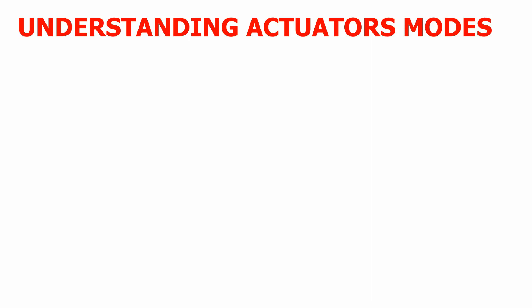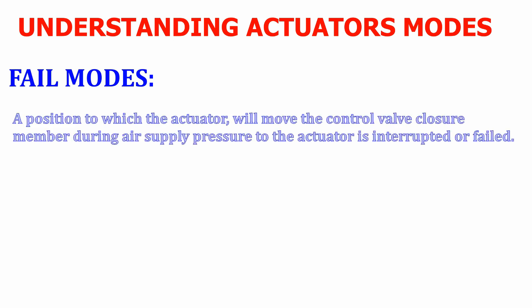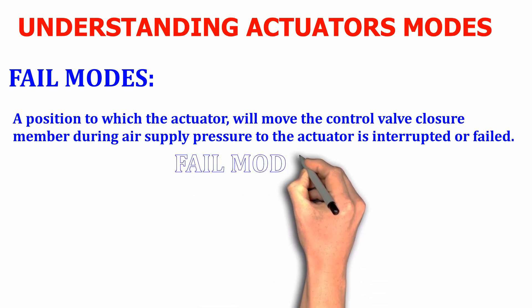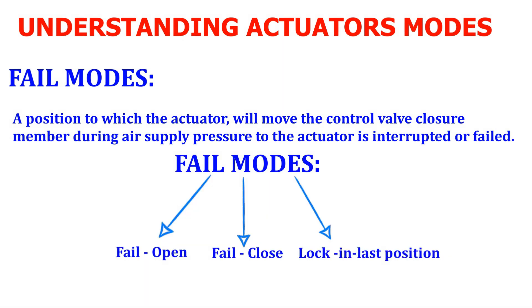So what is basically a failsafe mode? It is the position to which the actuator will move the control valve closure member — that is the plug — if the supply air pressure fails or gets interrupted. We have different types of failsafe modes: failsafe open, failsafe close, and lock-in last position.